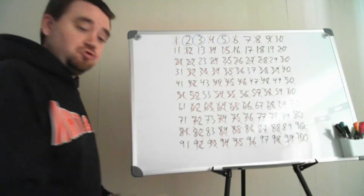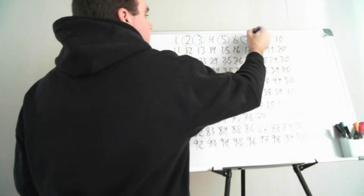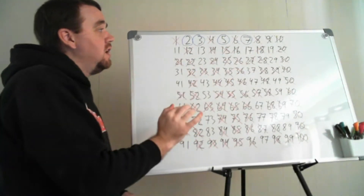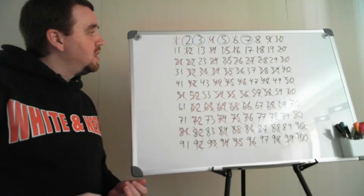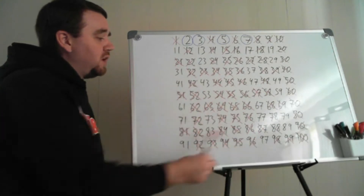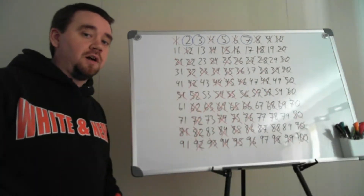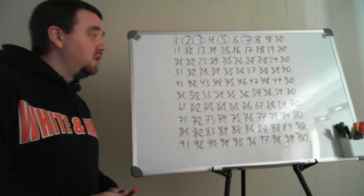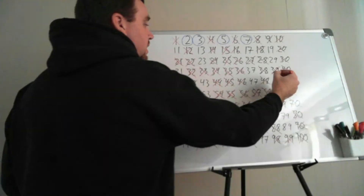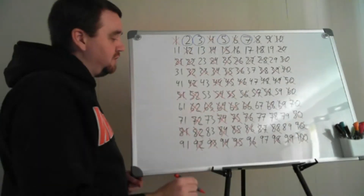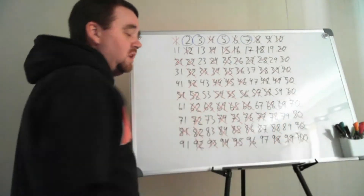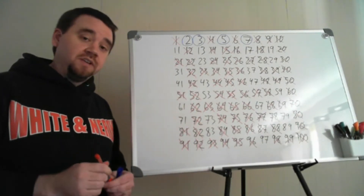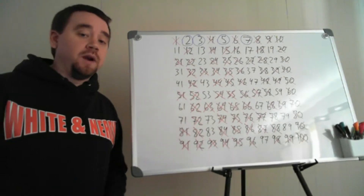Next, 7 must be prime. Prior to 7, none of the primes found can be used to construct it, and the only way to multiply to 7 is 1×7. I go through the chart and find multiples of 7 not already crossed off. At this point, only three remain: 49, 77, and 91. Verify for yourself that all other multiples of 7 have already been crossed off.